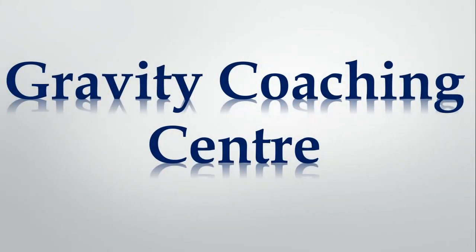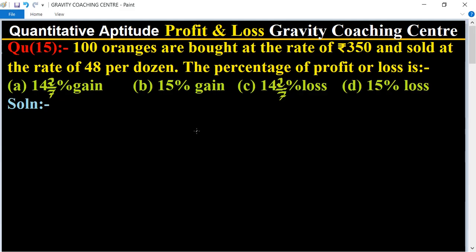Welcome to our channel Gravity Coaching Center, Quantitative Aptitude, chapter Profit and Loss. Question number 15: 100 oranges are bought at the rate of rupees 350 and sold at the rate of 48 per dozen. So the percentage of profit or loss is?